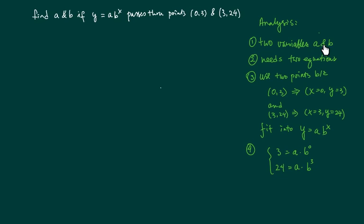The analysis goes something like this. We're asked to find two variables. Obviously we need two equations to solve for two variables. Now where are those two equations going to come from? Well, the only other info we were given are the two points. A point is really an x and y ordered pair, basically.